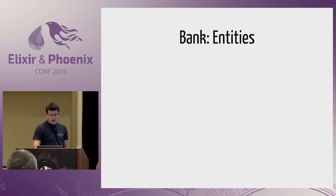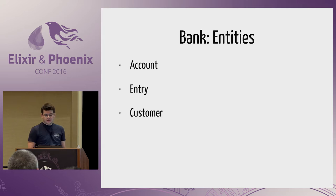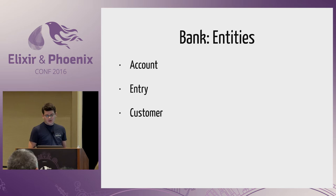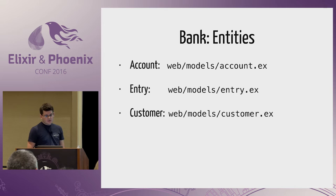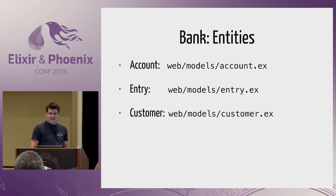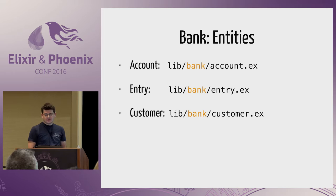Let's talk about entities in our bank: account, entry, and customer. I want to keep the customer separate from the account because a customer can have more than one account. Account and entry have a different rate of change than the customer. Once we implement our double-entry accounting system, we should be largely done with that code — the accounting rules are very stable, about 600 years old. The customer, on the other hand, is specific to our application and changes as requirements change. We're going to put this in lib — lib/bank/account and so on.